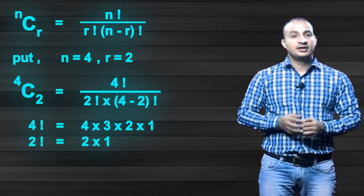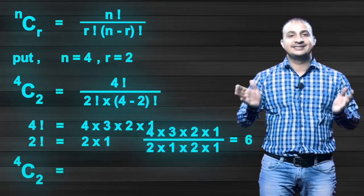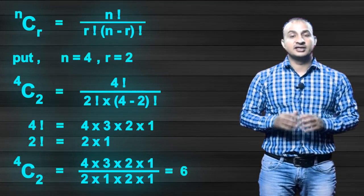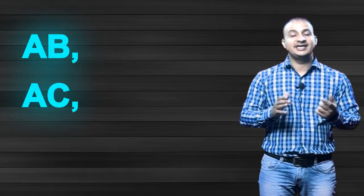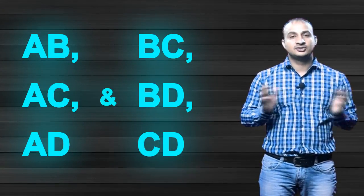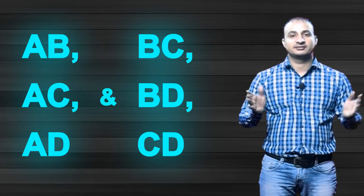Now solve, you will get 6. So 6 is the number of total selections. And we have already seen what are those 6: AB, AC, AD, and BC, BD, and CD. So this is the concept of combination.